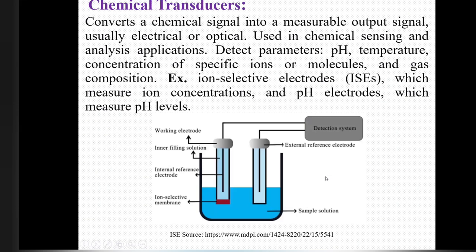Next is the chemical transducer. This transducer converts a chemical signal into a measurable output signal, usually electrical or optical. It is used in chemical sensing and analysis applications. It detects parameters such as pH, temperature, concentration of specific ions or molecules, and gas composition. An example shown here is ion-selective electrodes.